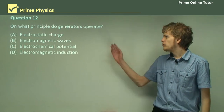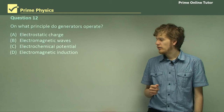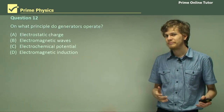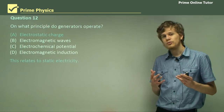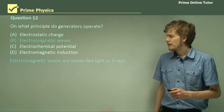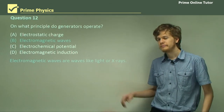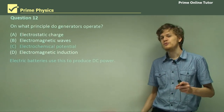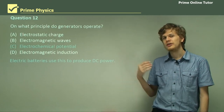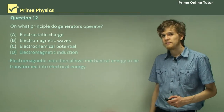Question 12: On what principles do generators operate? The options are electrostatic charge, electromagnetic waves, electrochemical potential, or electromagnetic induction. Electrostatic charge relates to static electricity. Electromagnetic waves are a form of energy transfer including light or X-rays. Electrochemical potential is what is stored in batteries. However, generators operate on electromagnetic induction — option D is the correct answer. Electromagnetic induction is what allows us to turn mechanical energy into electrical energy.